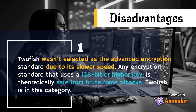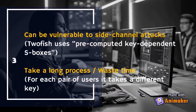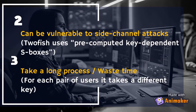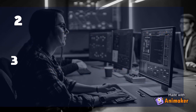Disadvantages: Twofish was not selected as the Advanced Encryption Standard due to its slower speed. Any encryption standard that uses a 128-bit or higher key is theoretically safe from brute force attacks, and Twofish falls in this category. Second, Twofish can be vulnerable to side-channel attacks, as it uses pre-computed key-dependent S-boxes. Third, there is a long process for each pair of key iterations.